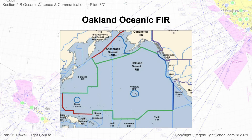On the Hawaii side, the Oakland Oceanic FIR border is, on average, about 225 miles north-northeast of the Hawaiian Islands, where Honolulu Control Facility, or HCF, begins. You know you are entering the Oakland Oceanic FIR when ATC tells you that radar service is terminated and that you need to contact San Francisco Radio, which is the controlling agency for the Oakland Oceanic FIR.